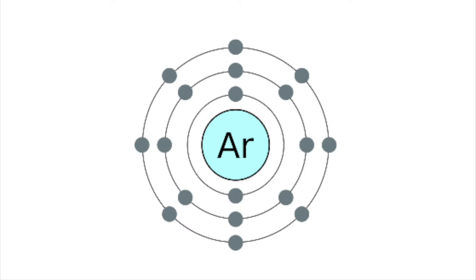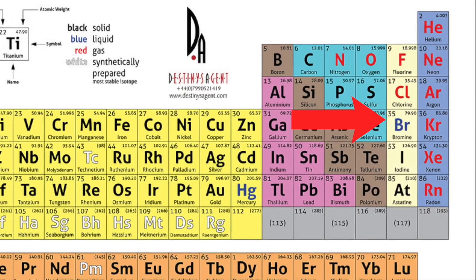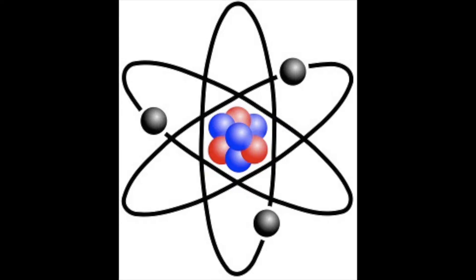So atoms want to have a stable electronic structure of 288 or a complete outer shell, like the group 0 elements in the periodic table. Yet most atoms do not have this structure.